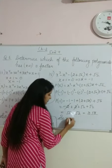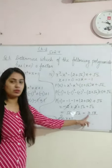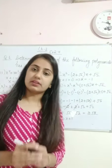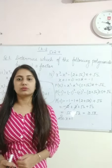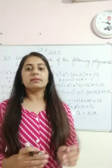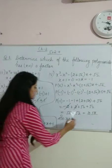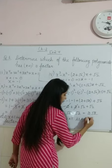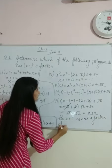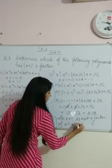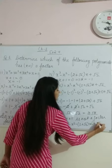So x+1 is not a factor — जब remainder 0 बचेगा तभी वो factor होता है। Remainder 0 नहीं है, that means उसका factor नहीं है। जैसे 3 और 6: 6 को 3 से divide करें तो remainder 0 बचता है, that means 3 is a factor of 6. यहाँ पर remainder 0 नहीं आया, so x+1 is not a factor of x³ - x² - (2+√2)x + √2.